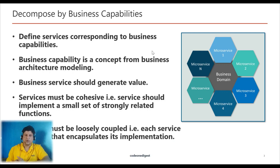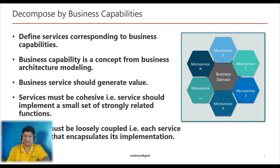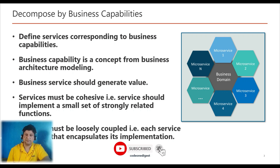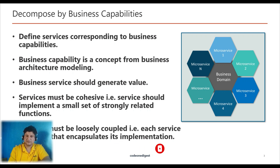Let's start with the Decompose by Business Capability design pattern. Microservice architecture structures an application as a set of loosely coupled services. The goal of microservice architecture is to accelerate software development by enabling continuous delivery and deployment. The first question that comes to mind is: how to decompose a monolithic application into services? The answer is to define services corresponding to the business capabilities.